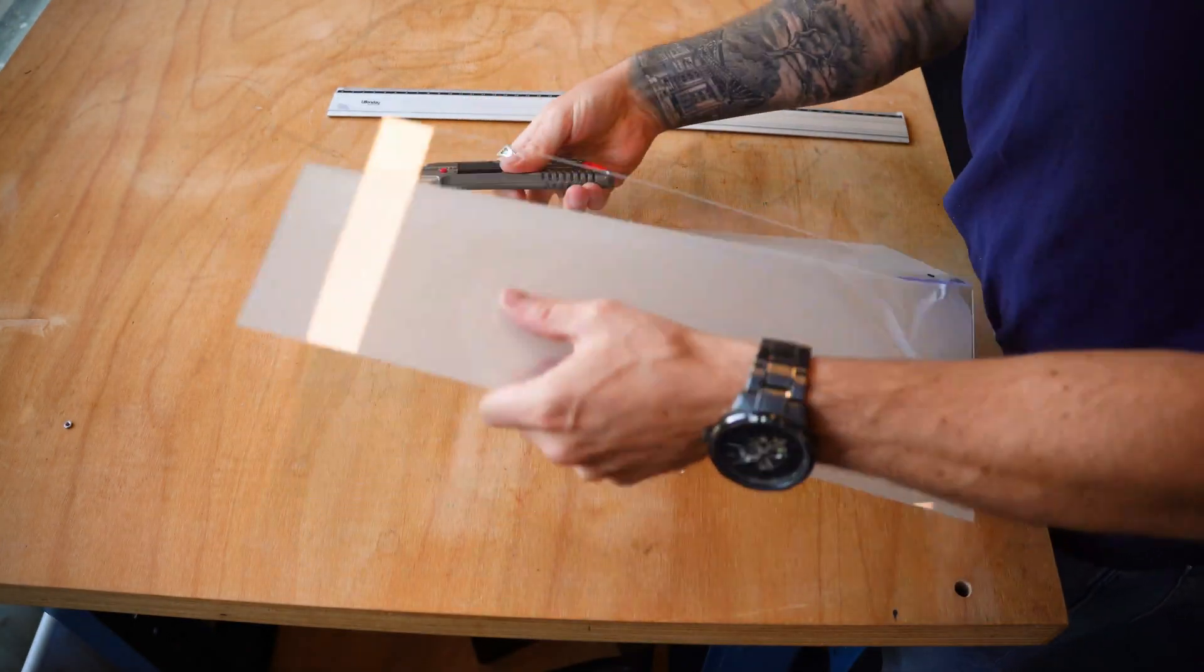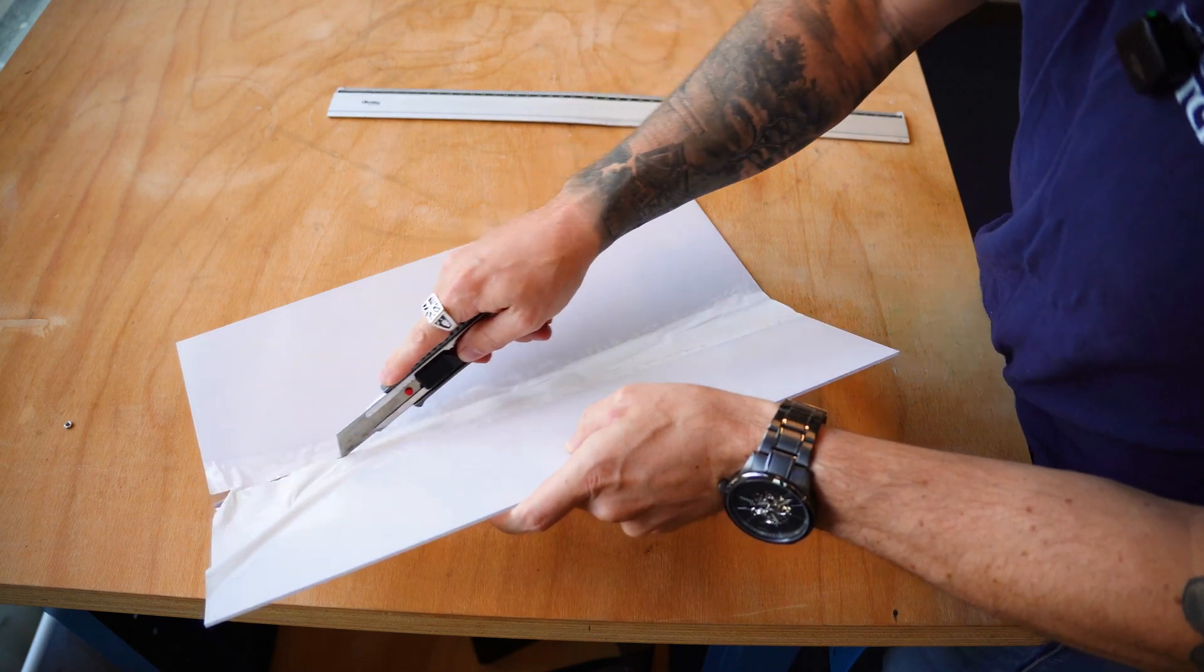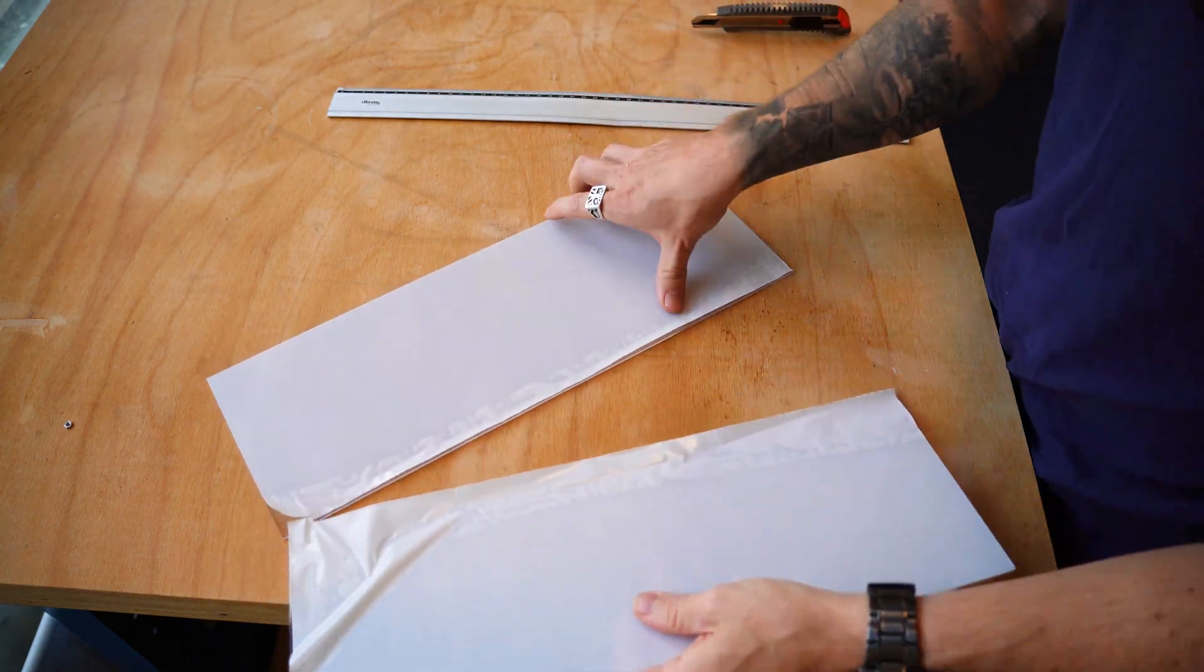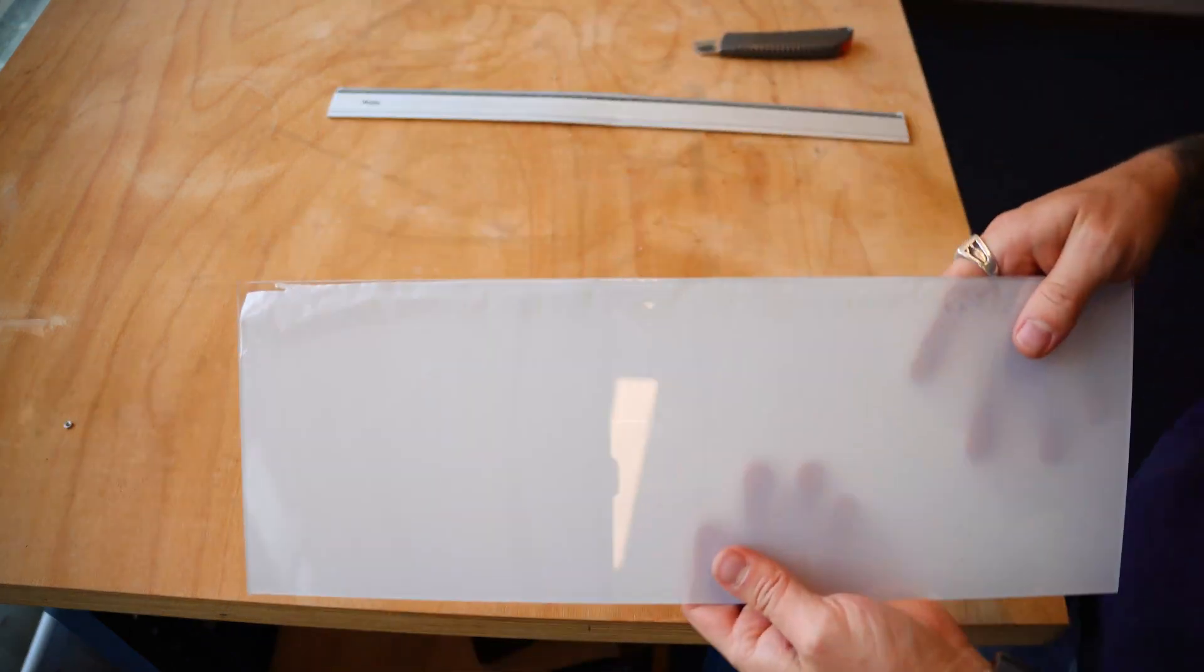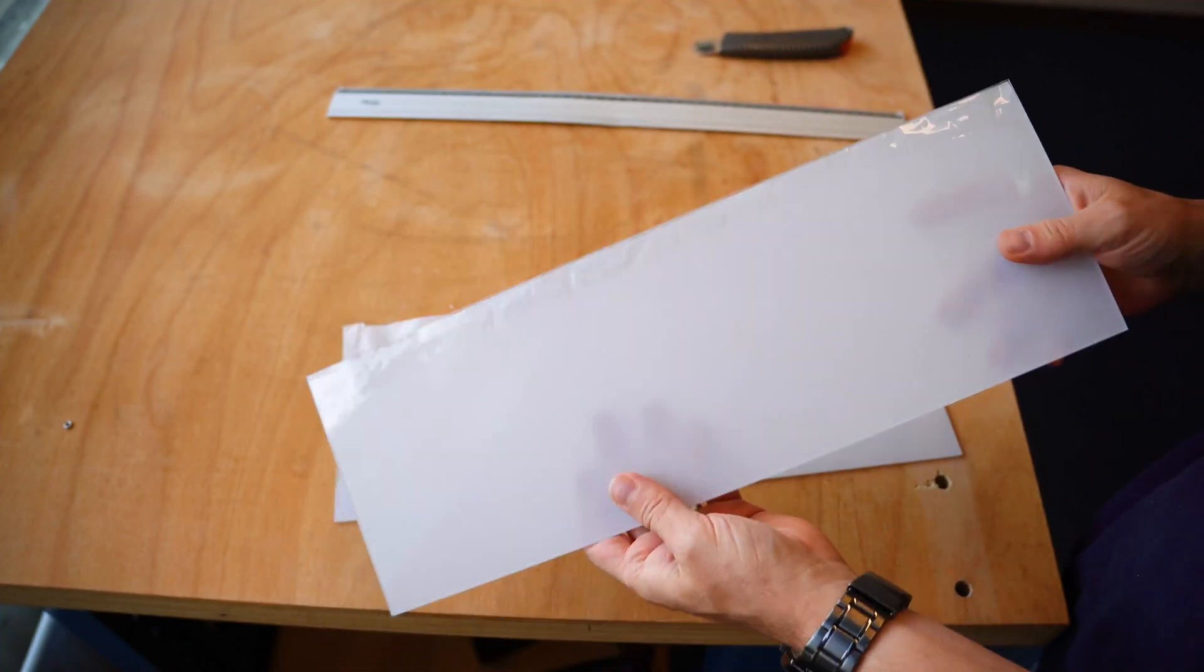We can take that protective plastic, give it a quick cut through. And now you have your piece of polycarbonate cut to size.